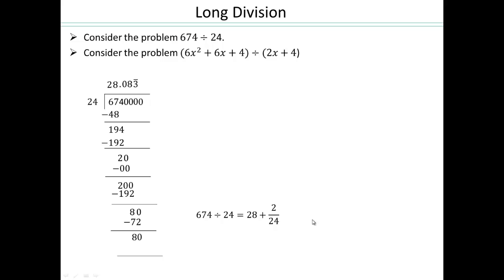Otherwise, you can leave the answer as 28 whole number quotient and 2 as your remainder. Now let's see what we can do with polynomials. In polynomials, they're going to work the same way. We're going to have 2x plus 4 times what gets closest to this polynomial. You don't look at the whole polynomial at once — you look at the highest term first, which was the 6 in the numeric case.